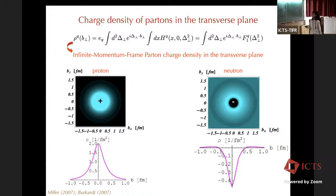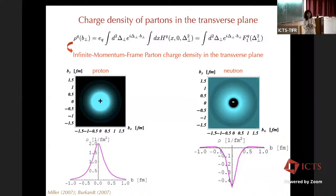For the neutron, you have again a monopole distribution, but going from the center where you have a core of negative charge to the periphery where you find positive charge. Integrating over all impact parameter space, you get zero, which is the charge of the neutron. This is a different picture from the usual description of the neutron as a negative core surrounded by a pion cloud — the difference is that now we are in two dimensions with an exact probabilistic interpretation.